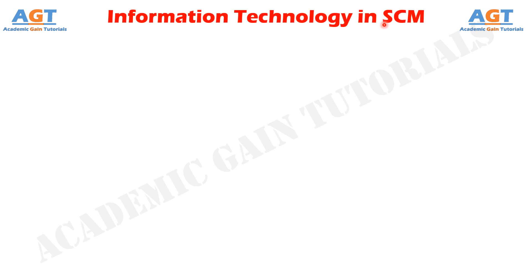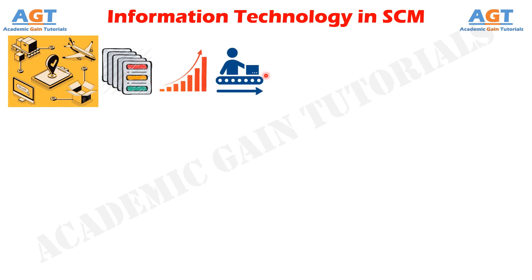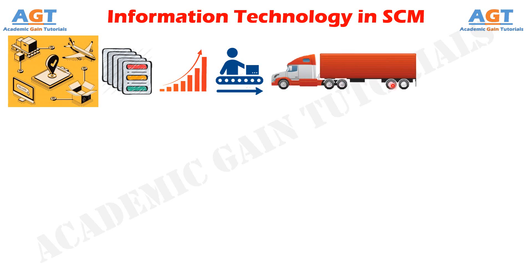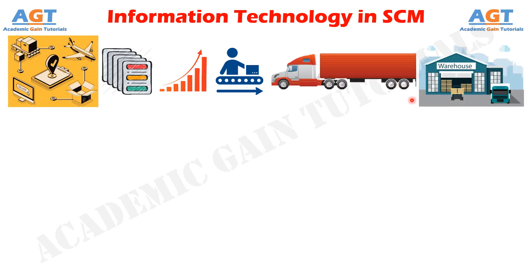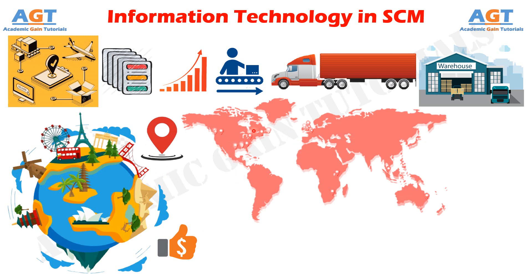Supply chain management is a broad-based function that encompasses all business and operational processes involved in but not limited to procurement, manufacturing, and finished goods transportation, warehousing and distribution, and inventory management. In a globalized business scenario characterized by geographically spread markets, raw material procurement sources across the world, and cheaper manufacturing and labor markets being available in the developing world, the business of meeting demand with supply is constantly changing and evolving.